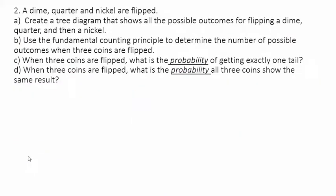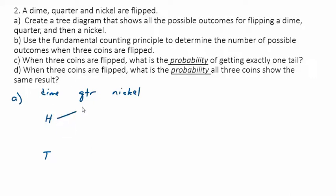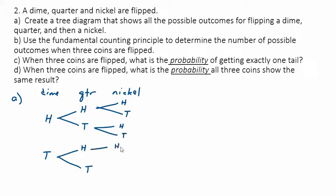A dime, a quarter, and a nickel are flipped. Let's create a tree diagram showing all possible outcomes. The dime can be heads or tails. If the dime is heads, the quarter can be heads or tails; same if the dime is tails. Then for each of those four outcomes, the nickel can be heads or tails — giving us branches for each coin at each step.